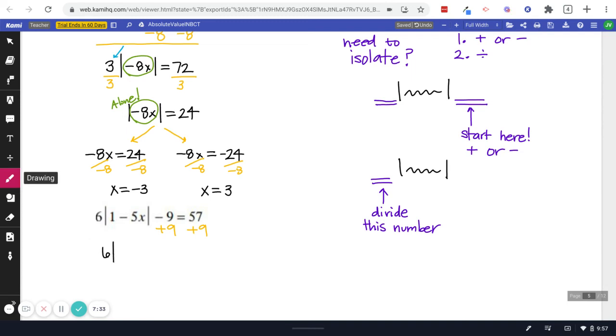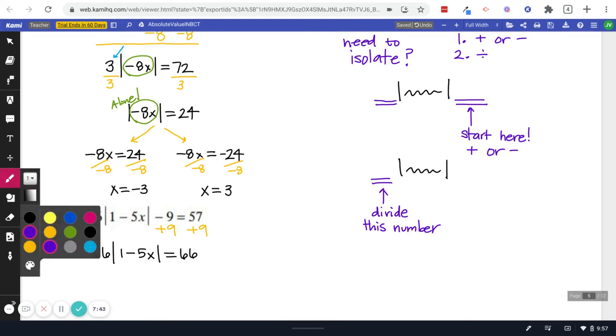And we're going to get a 6, a 1 minus 5x, and the 66. Right? So we did our plus or minus first. First was the plus or minus. First plus or minus.